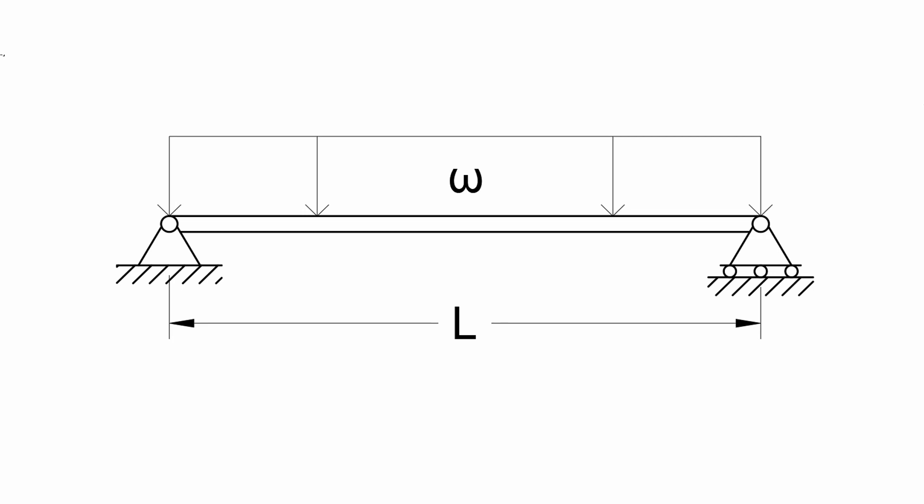Consider a simply supported beam of length L that carries a uniform load omega throughout its span. In statics, we learn that the reactions of the hinge and roller support are both omega L over 2. Taking a section at distance x from the left support, we can determine the equivalent shear force and bending moment at that section in terms of x.